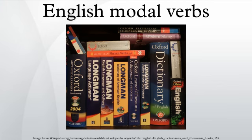The following verbs can be classed as the principal modal verbs of English. They are listed here in present-preterite pairs where applicable: can and could, may and might, shall and should, will and would, and must.